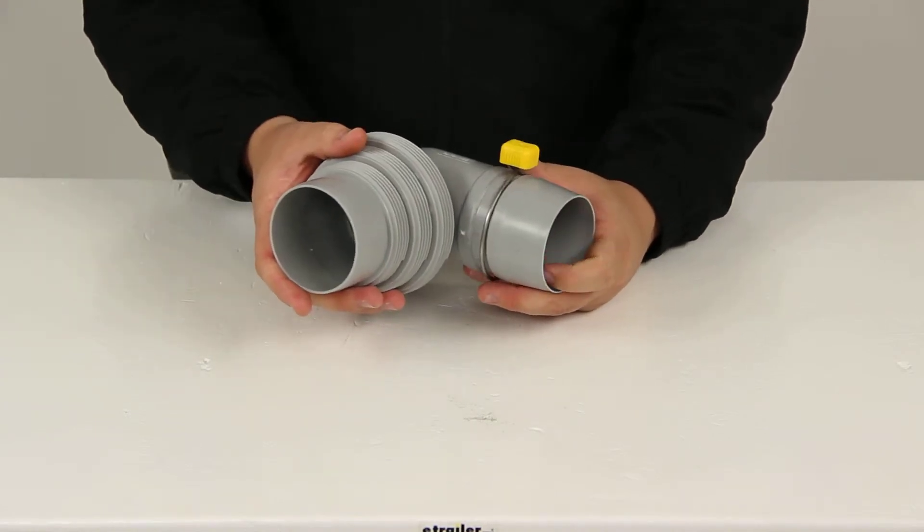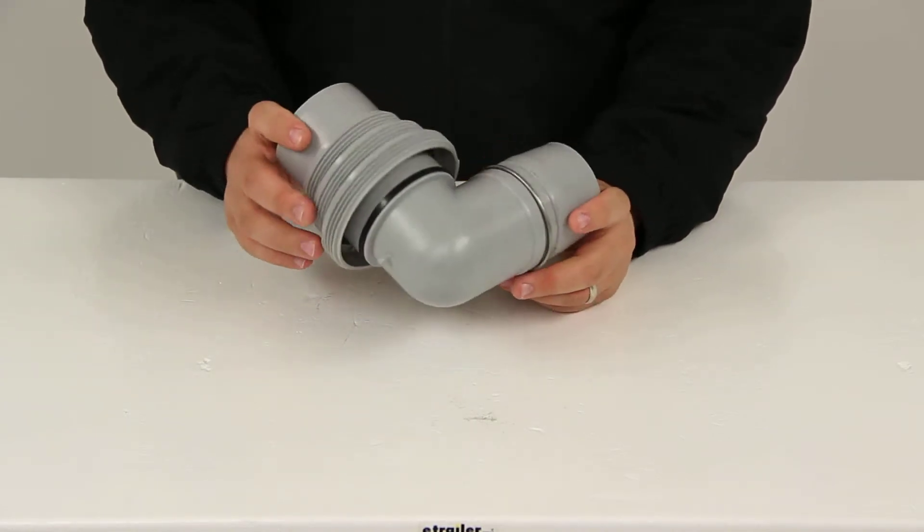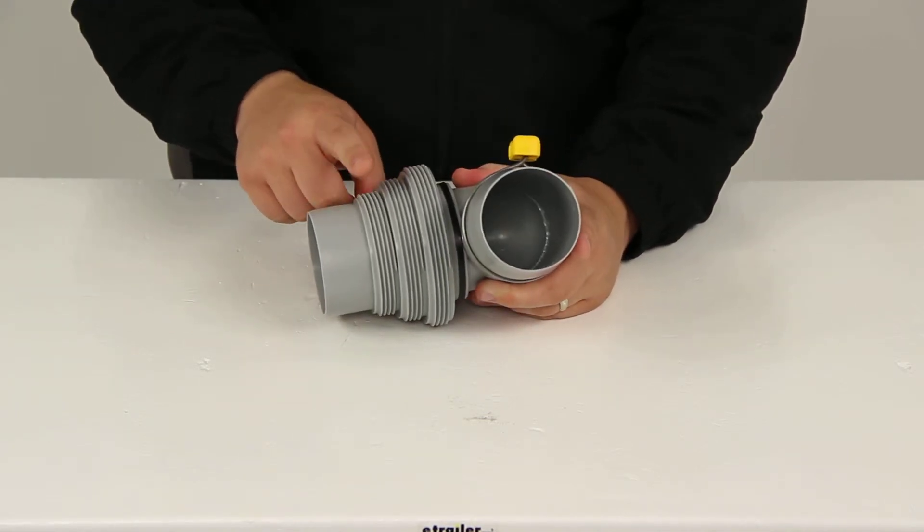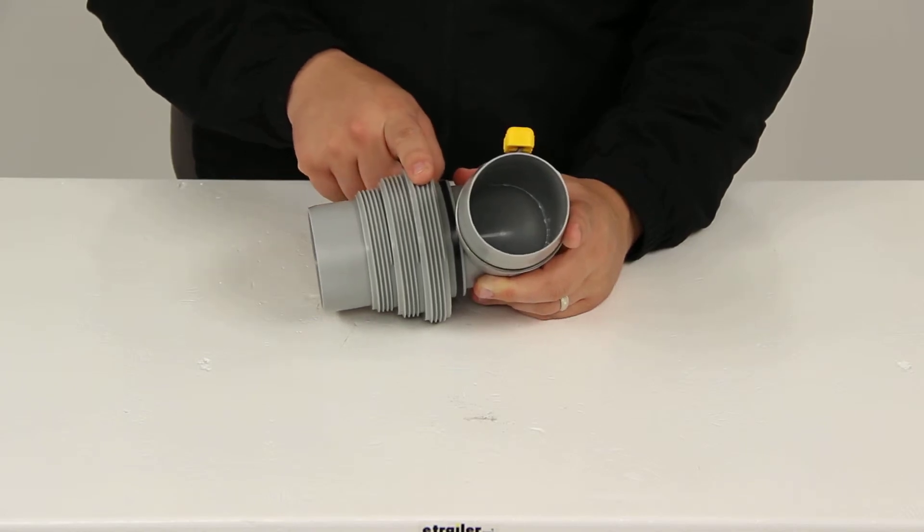The 4-in-1 adapter accepts elbow fittings for secure connection to the dump station inlet. It's designed to fit a 3-inch slip, 3-inch, 3.5-inch, and 4-inch threaded pipe inlets.